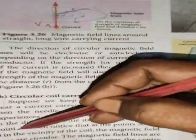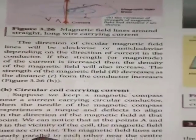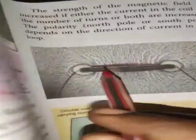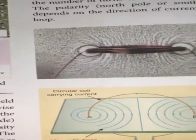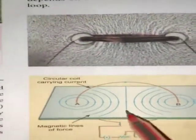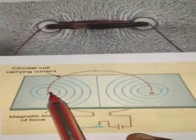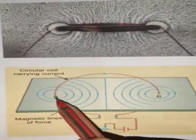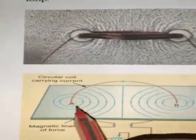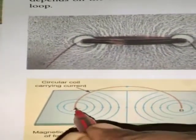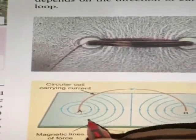We can notice that at points A and B in the vicinity of the coil, the magnetic field lines are circular. A cardboard with two holes is used, and a circular current carrying conductor passes through it with one end at A and the other at B. When current flows, magnetic field lines are produced in circular patterns around each side.